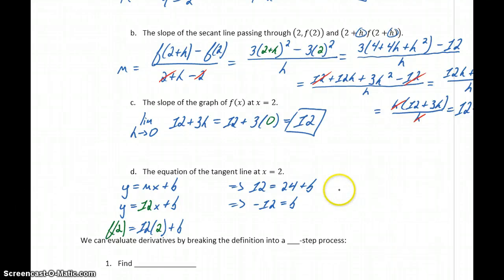So the equation for the line tangent to our graph at this point x equals 2 will be y equals 12x minus 12.